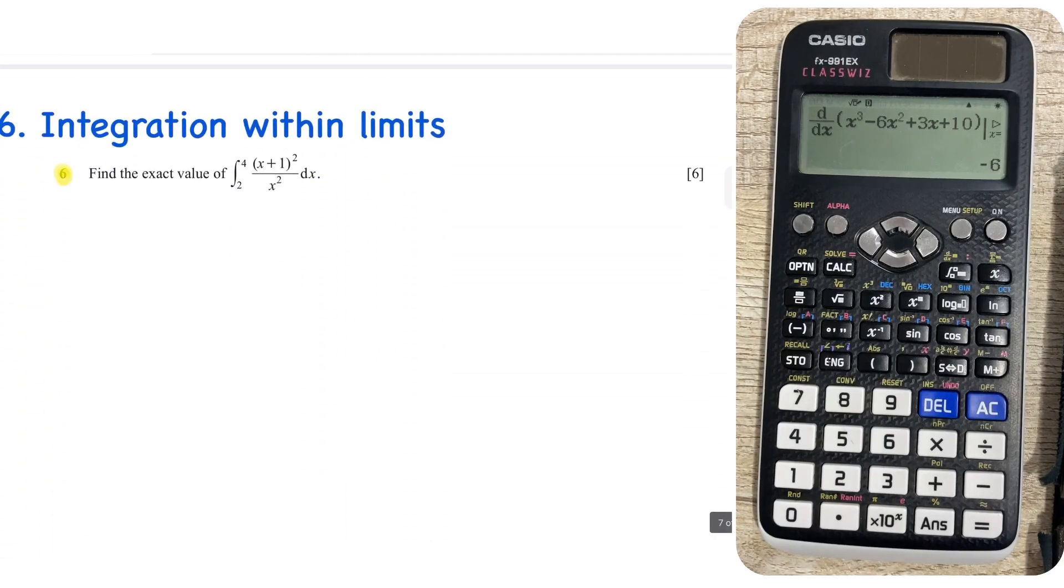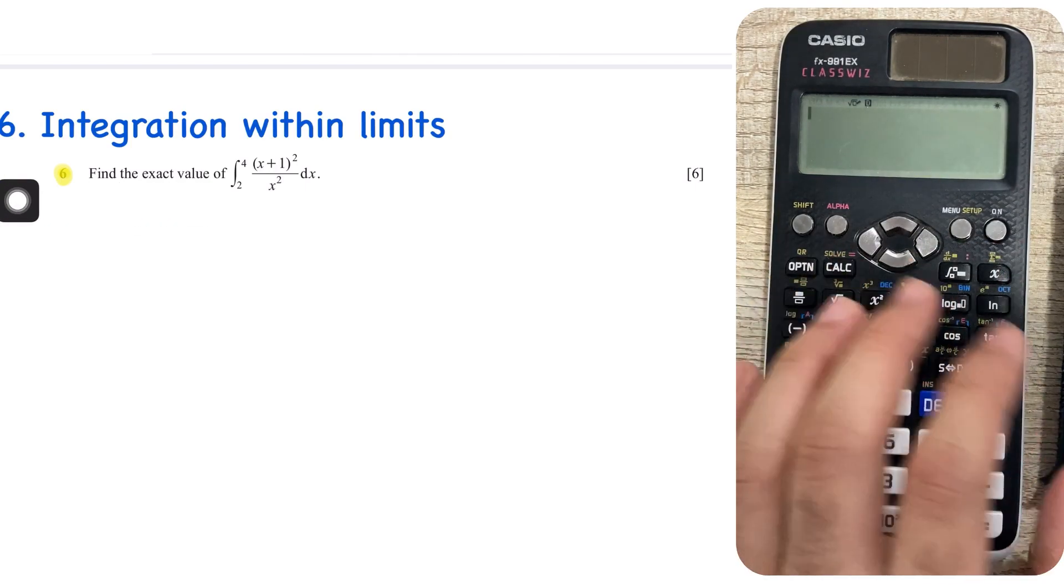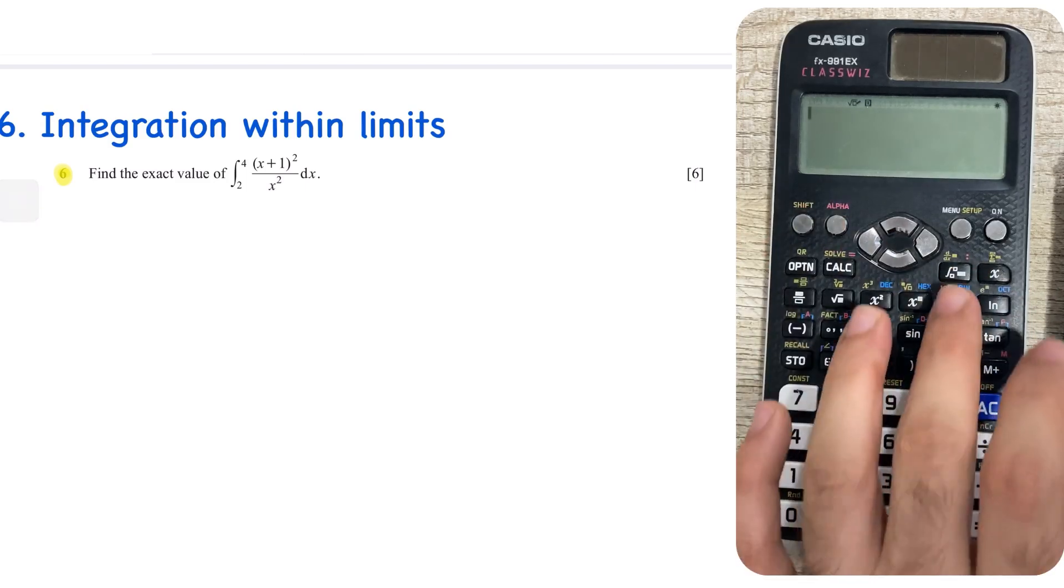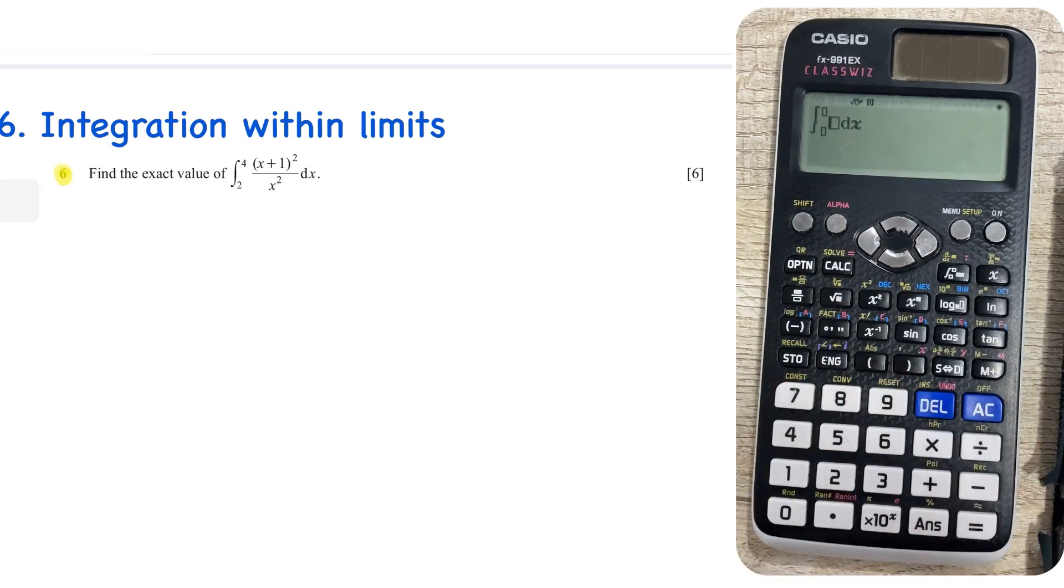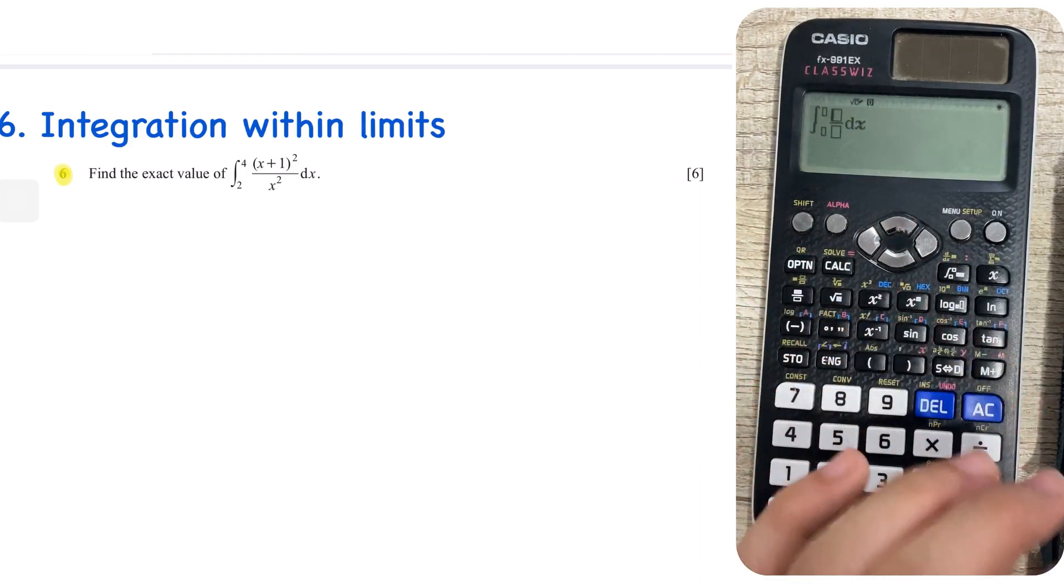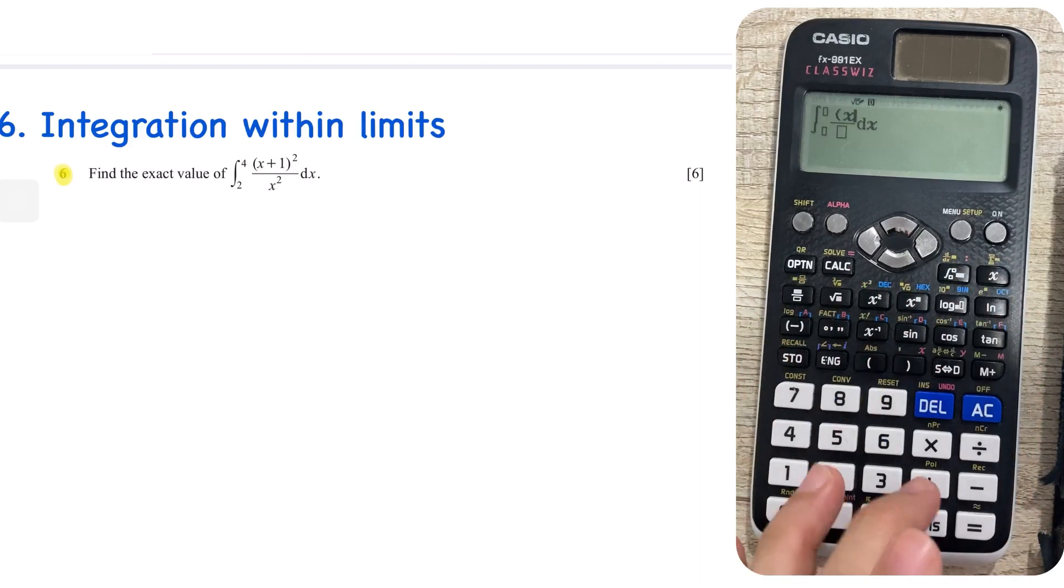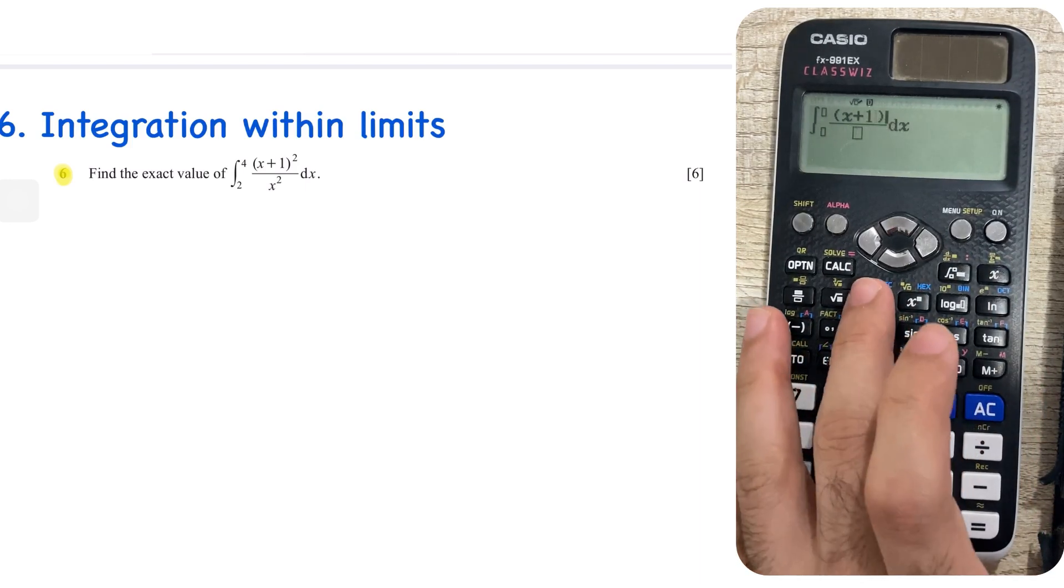Number 6 is integration within limits, again, also my personal favorite. Now, this has a catch, this particular question, because we're supposed to find the exact value. Now it's very likely that a calculator will not give the exact value, so what we can do is, we can compare our value with the exact value and see if the decimals match or not. So integrate, what do we need to, again, you don't need to integrate it yourself, your calculator will do the integration for you. So open the bracket, write x plus 1, bracket close, square it,